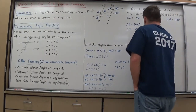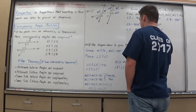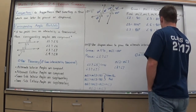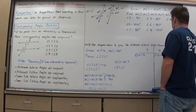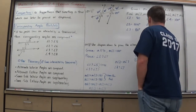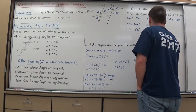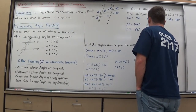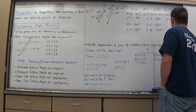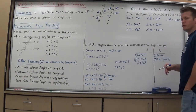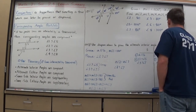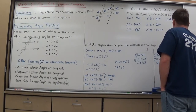So the first statement in my formal proof is my given: A is parallel to B — that's the only given I need. The reason is 'given.' Next, I state the corresponding angles: angle 1 is congruent to angle 5, and angle 3 is congruent to angle 7. I only list the corresponding angles I'll actually end up needing and using. The reason is the Corresponding Angles Postulate.